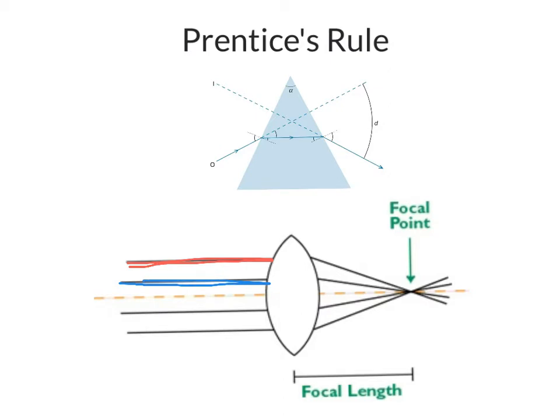Prentice's Rule also depends on the strength of the lens. So if the lens was stronger, then it will give more of a prismatic effect.